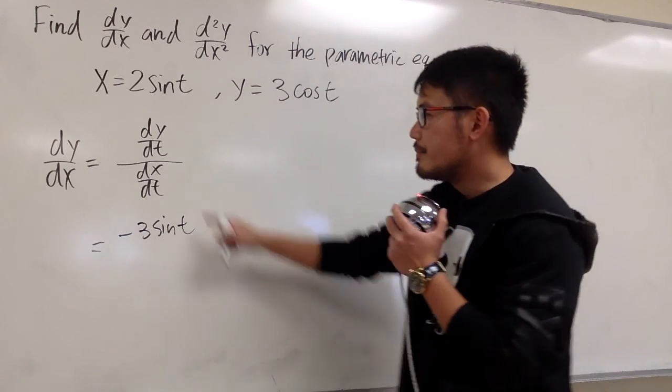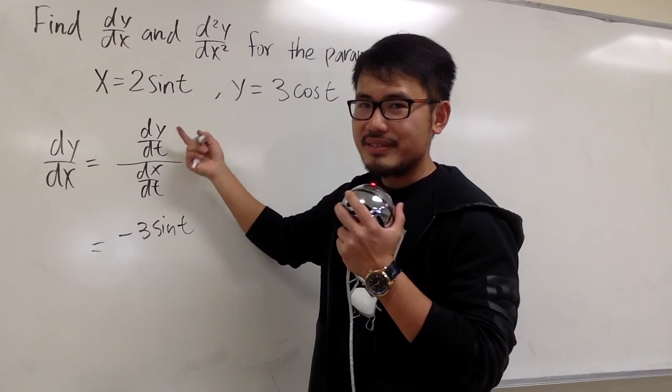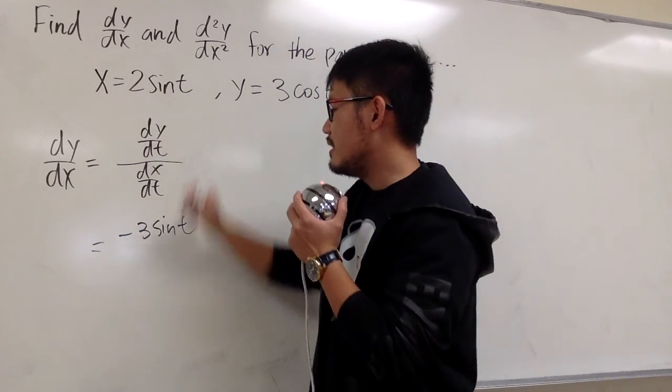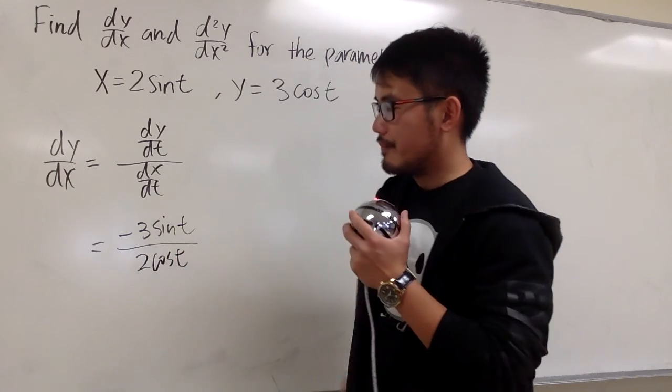And then for the bottom, dx/dt, we look at the x equation and do the derivative. Derivative of 2 sin t is 2 cos t.